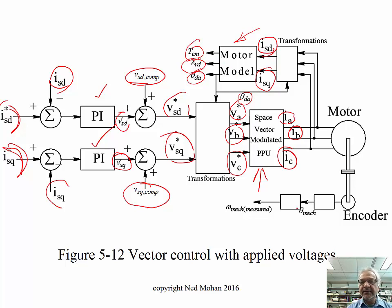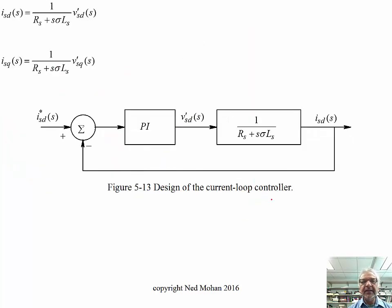We sense these currents, and then we apply that transformation through theta dA, which gives us ISD and ISQ, and that motor model that we have seen earlier gives us these outputs over here. And here, we have an encoder, and we end up with this measured mechanical speed, which is used in speed control loop over here. So that's a basic block diagram, and we still have to design the controller.